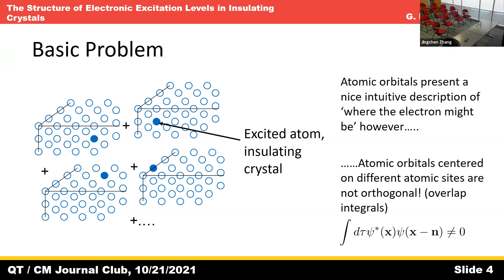For instance, if you have something like a hydrogen 1s function for the 1s state of hydrogen, and you take that function and put it at some other lattice site, there's going to be some non-zero overlap, which goes to zero as the sites go infinitely far apart — but not in general. We would like a set of orthogonal single-electron functions that are atomic-like in a sense. As Wannier puts it, they don't do too much damage to the atomic orbitals.